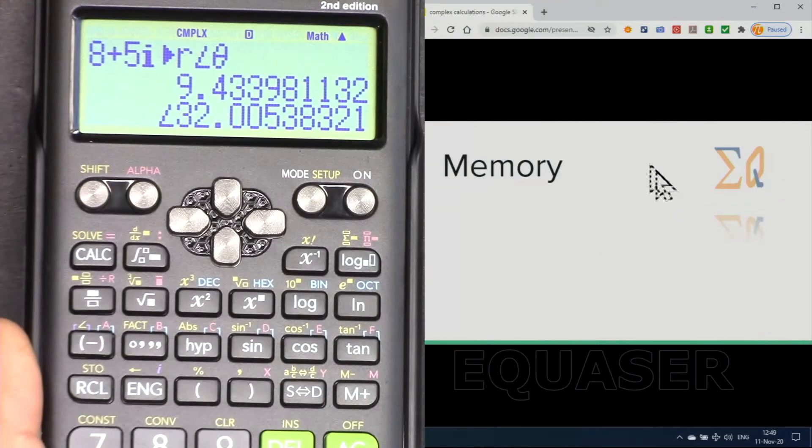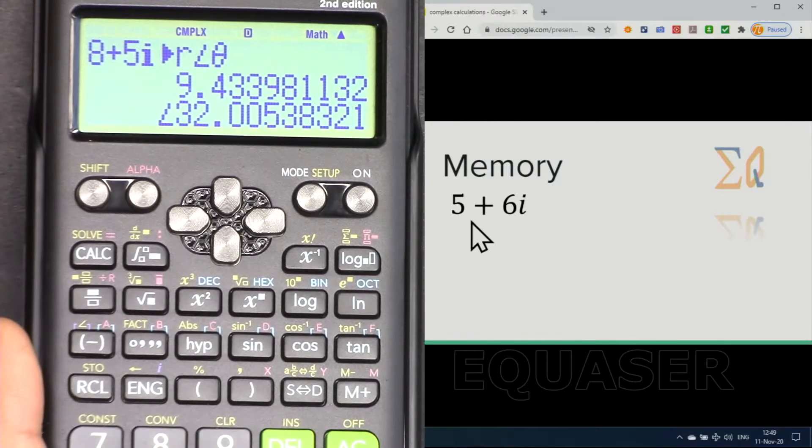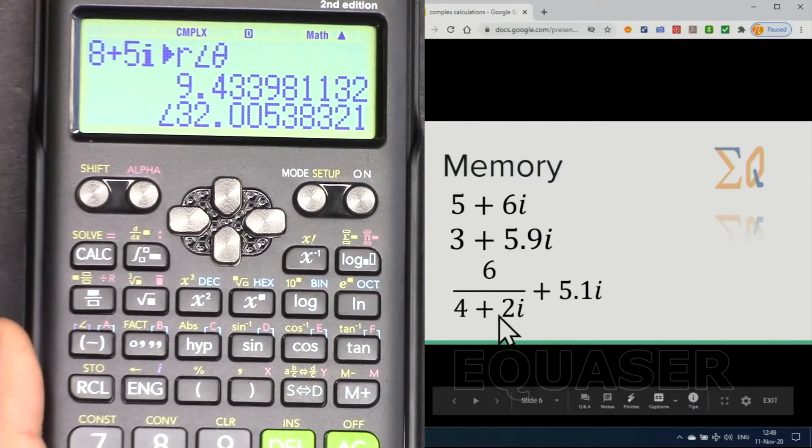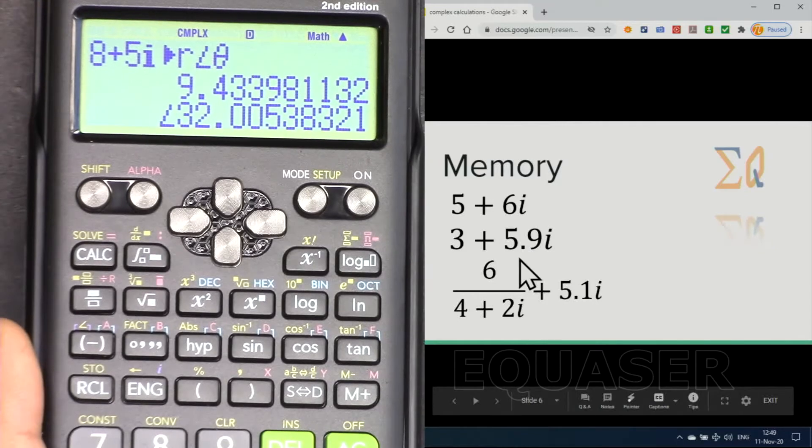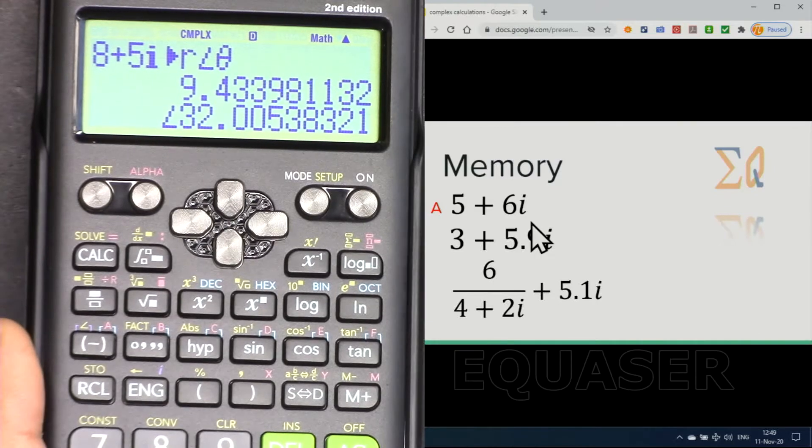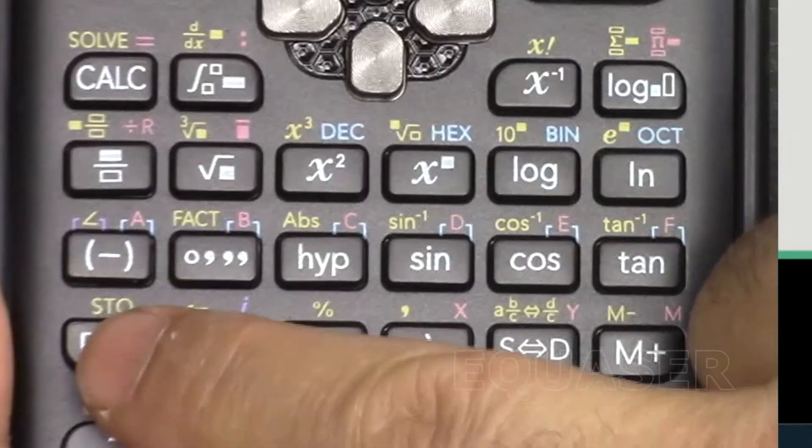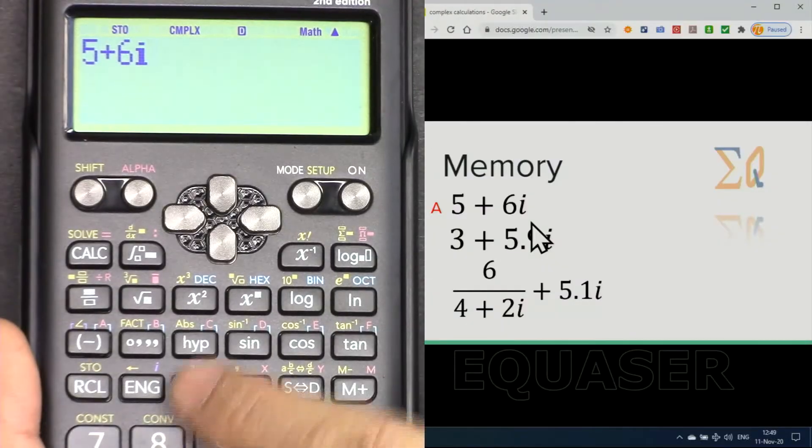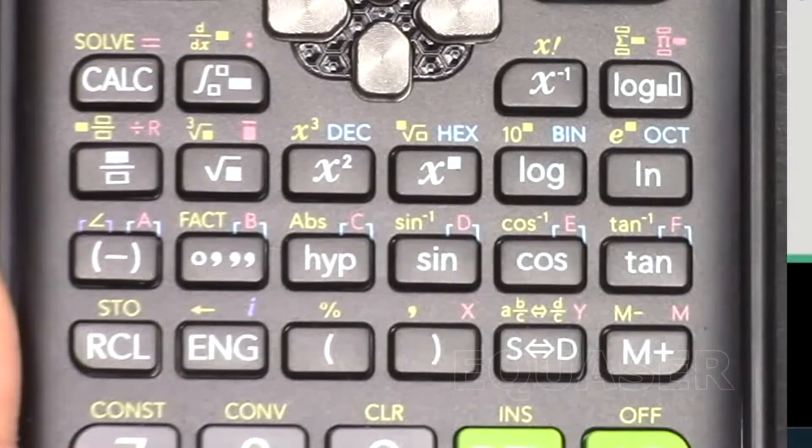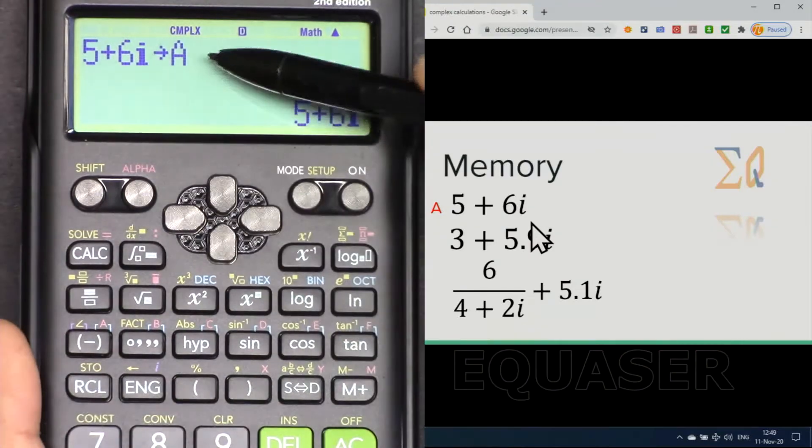Pressing it again will go back to the screen. We can put values in the memory. Let's say you want to put this value into memory, and you have this value also in another memory, and we have this value into memory to use them in your calculation. Let's say you want to put this in memory A: 5 plus 6i. Press shift and then store. Once you did, then all these memories will be available: A, B, C, D, E, F, X, Y, and then also M. M is independent memory; I have separate video for that. Press A and this value went into A.